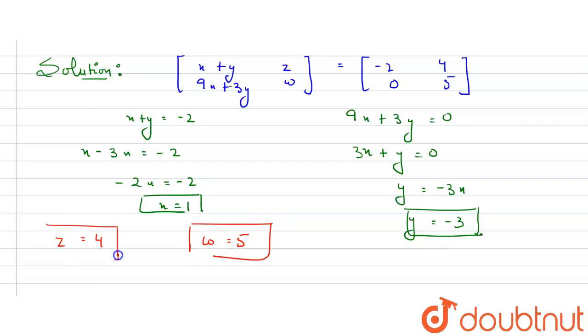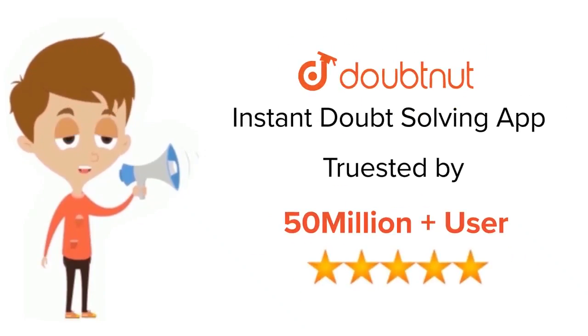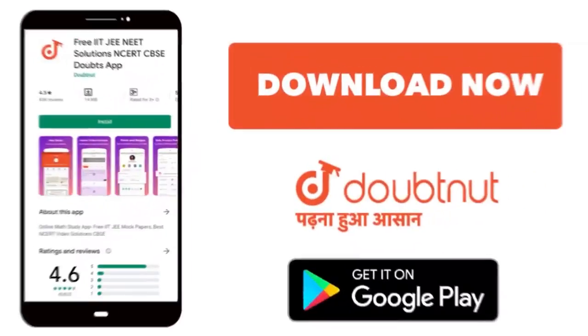So we have got the value of x, y, z, and w: x is 1, y is minus 3, then z is 4, and w is 5. Thank you. For class 6 to 12, IIT-JEE and NEET level, trusted by more than 5 crore students, download Doubtnut today.